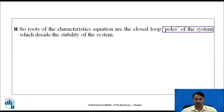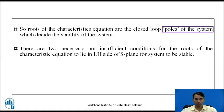Take a pause here and recall how poles of the system on the s-plane decide the stability of the system. When poles are on the left side of the s-plane, then it is a stable system. When poles are on the right hand side of the s-plane, the system is unstable. When poles are on the imaginary axis without repeating, the system is marginally stable or critically stable. There are two necessary but insufficient conditions for the roots of the characteristic equation to lie in the left hand side of the s-plane for the system to be stable.